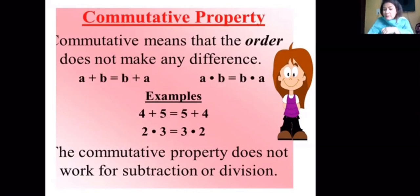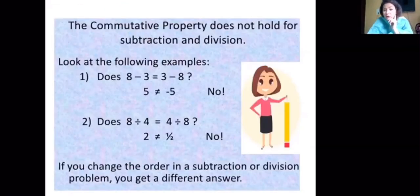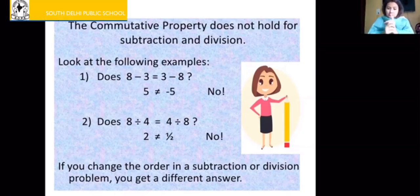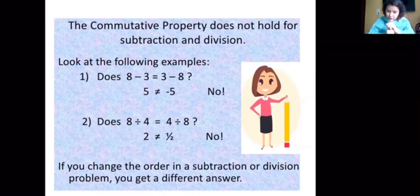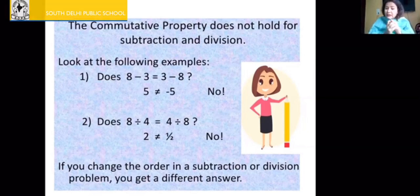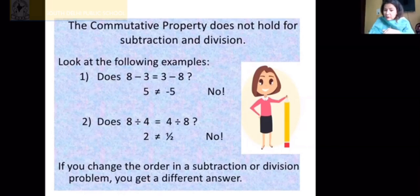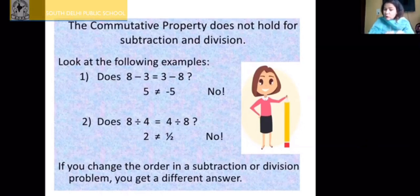Commutative property does not hold for subtraction or division. For example, 8 minus 3 is 5, but if you change the order, 3 minus 8 is minus 5 — they are not equal. So we cannot say commutative property holds for subtraction. For division: 8 divided by 4 is 2, but 4 divided by 8 is 1/2 — a fraction. These two values are not the same when you change the order. Therefore, commutative property does not hold for subtraction and division.